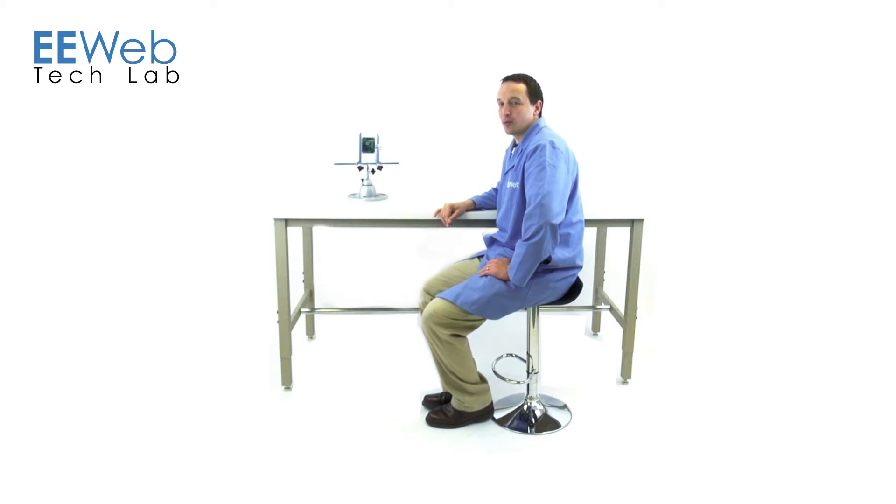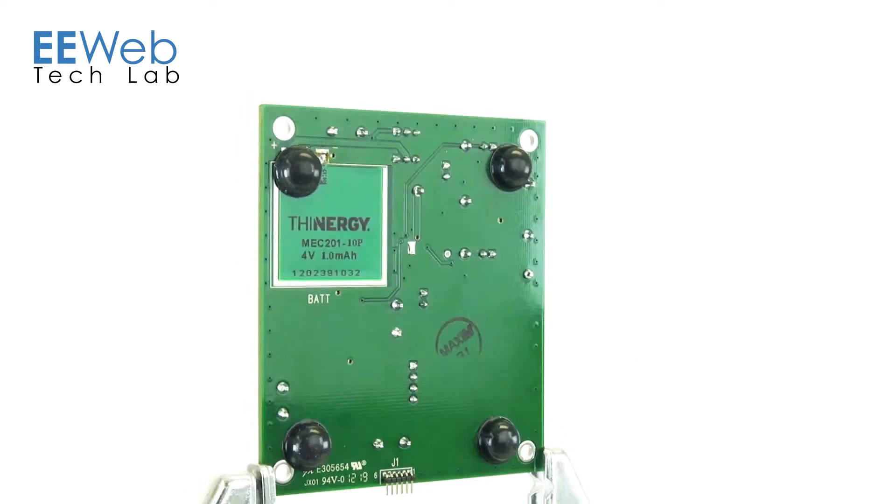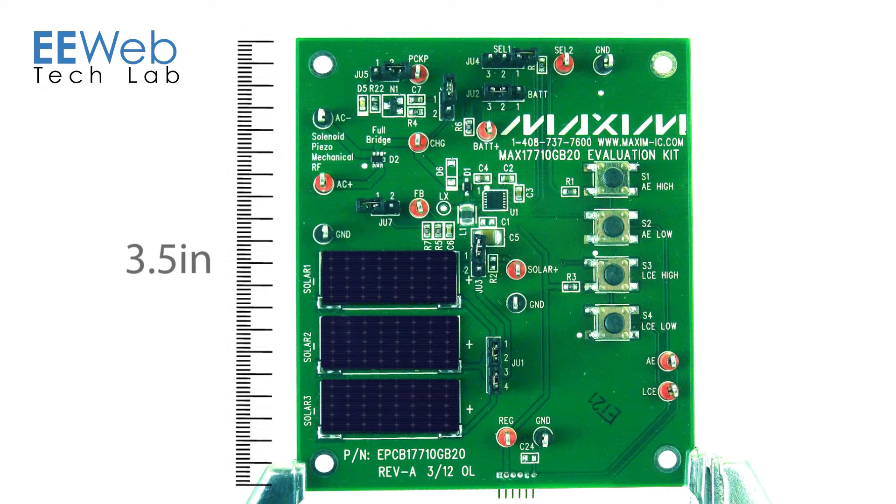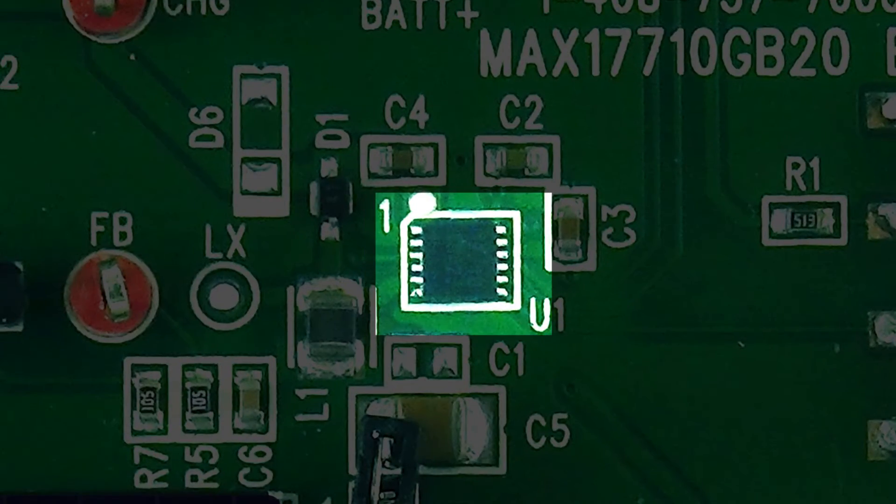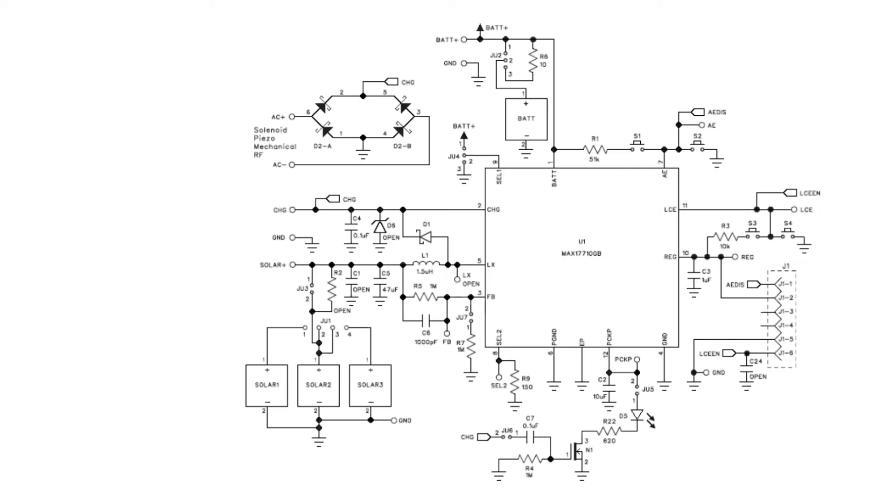Now let's take a closer look at the hardware. This IC really serves two purposes. One is to charge. To that end, it has a boost regulator to charge from voltage sources as low as 0.75 volts.